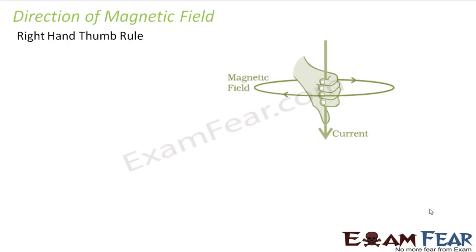Now, what about the direction of the magnetic field? To determine the direction of the magnetic field in the case of a straight current carrying conductor, we use the right hand thumb rule. The name itself tells us what it is about: it makes use of your right hand and your thumb. If your thumb represents the direction of the current flowing through the wire, then the direction in which all the other four fingers curl represents the direction of the magnetic field.